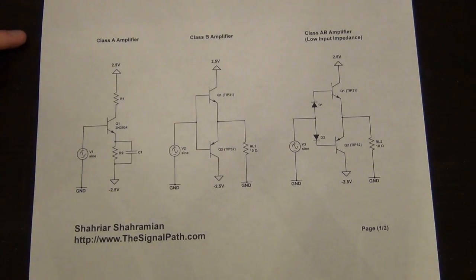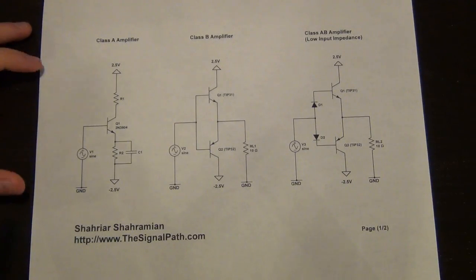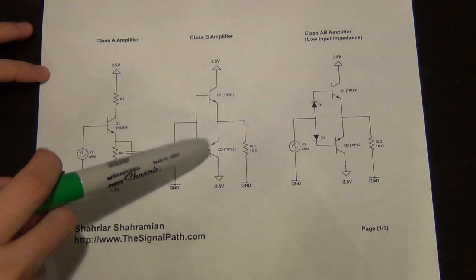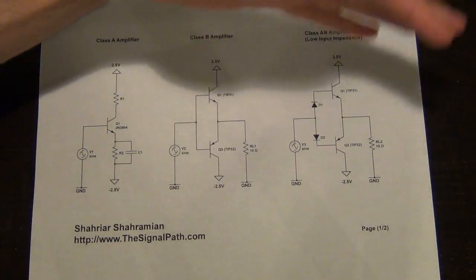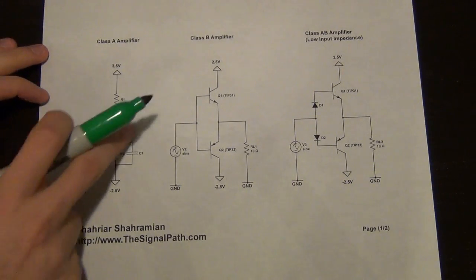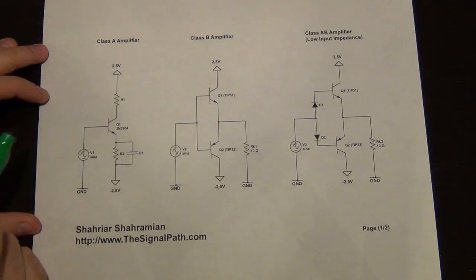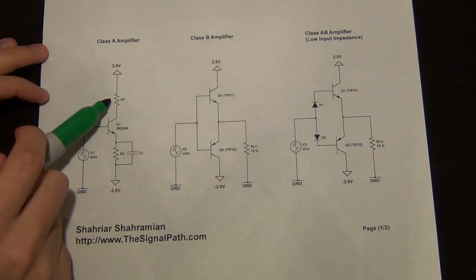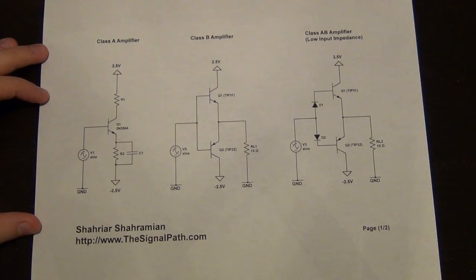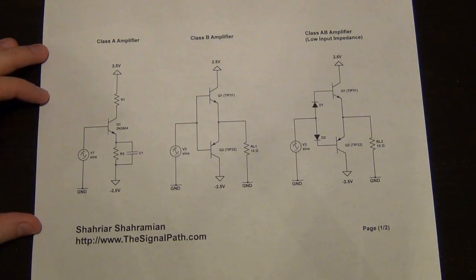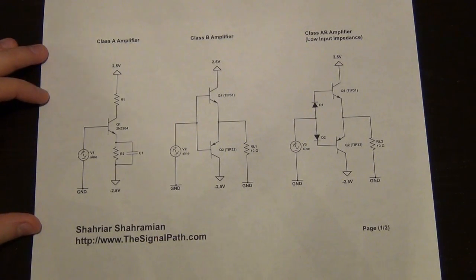Here I'm showing the schematic of three different types of amplifiers: Class A, Class B, and Class AB. Let's focus on what we've built before — the Class A amplifier — which has a single transistor with a load resistor R1, a degeneration resistor R2 shunted with capacitor C1. We went through the analysis and figured out how this circuit works.